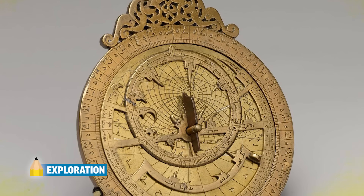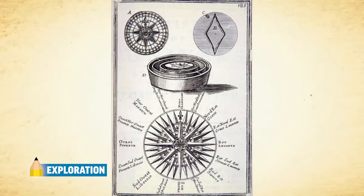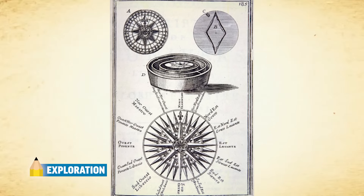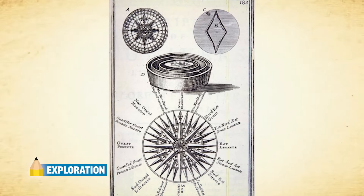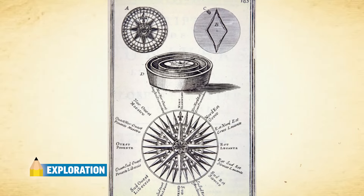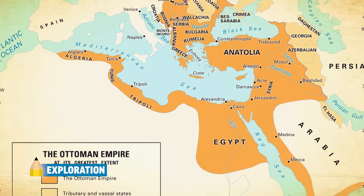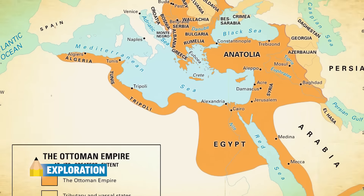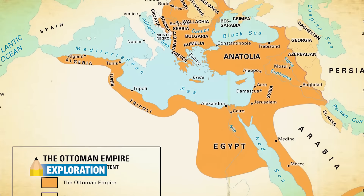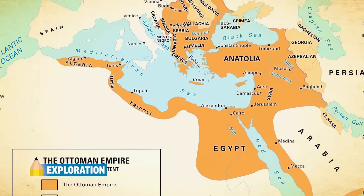Using the astrolabe, lateen sails, and the compass, Europeans set sail to get more involved in those trade routes. In 1492, Columbus sailed the ocean blue — he wanted to get involved in Indian Ocean trade without going through the Ottoman Empire. So this Italian set west from Spain, hoping to land in Asia, but landed in the Caribbean.